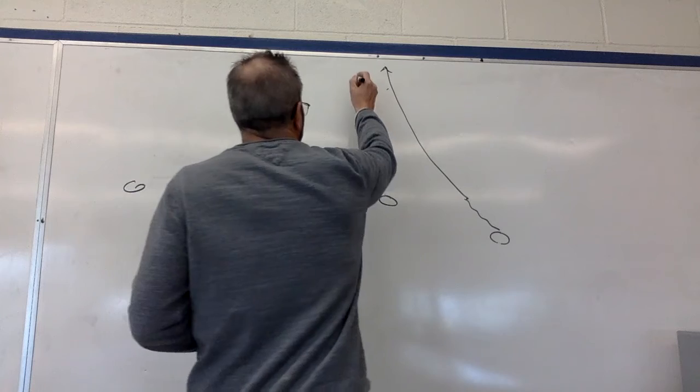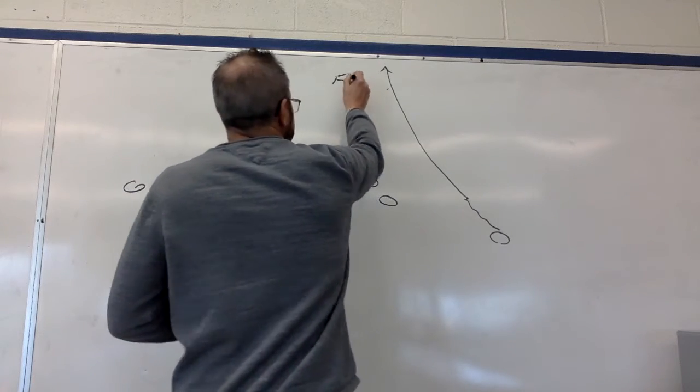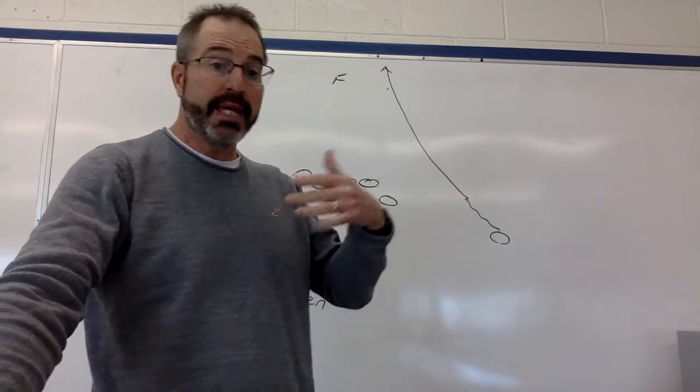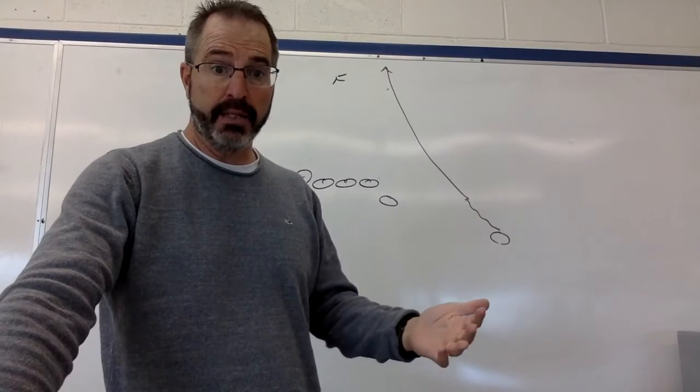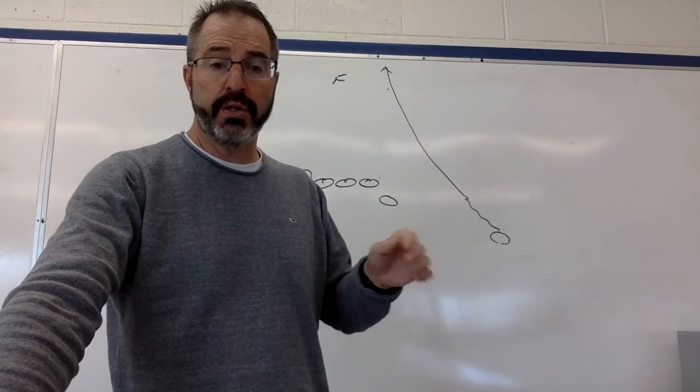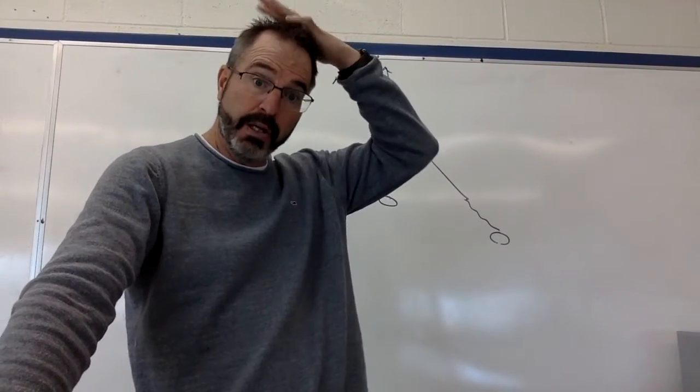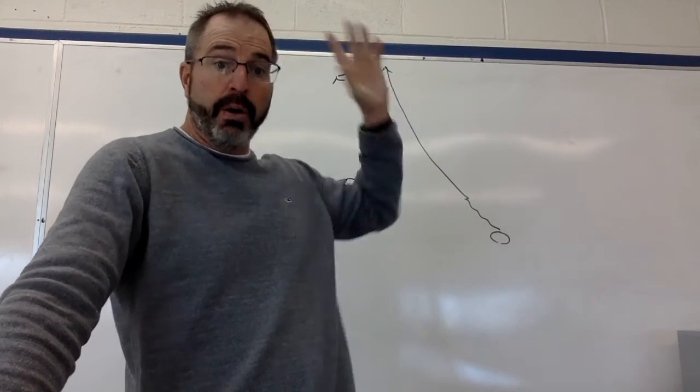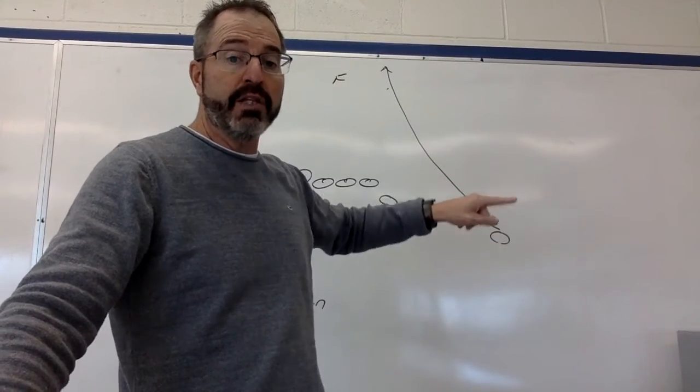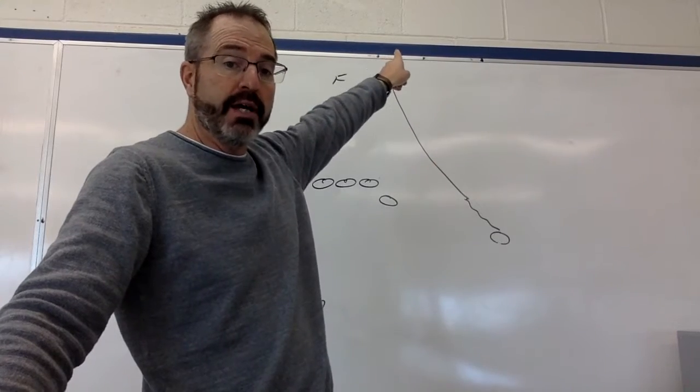I want you to run directly looking for wherever the free safety is to take him out of the play by running right into his zone or his area. Now again, that's going to be an audible that I'll do if I think we need it. But we're going to try to take the free safety out of this play by having you come over the top on him.